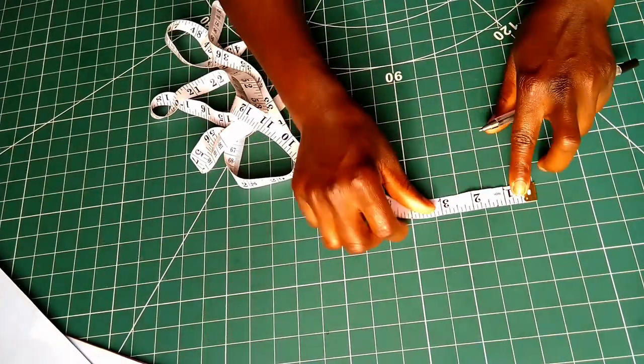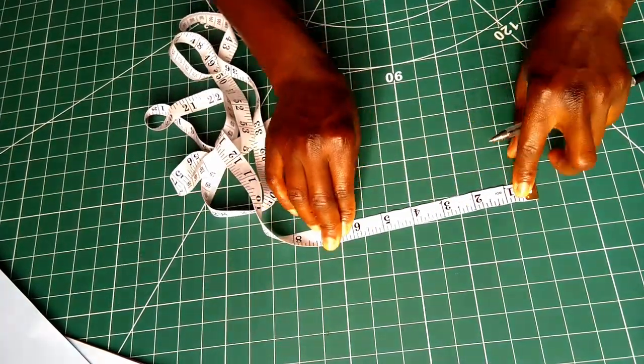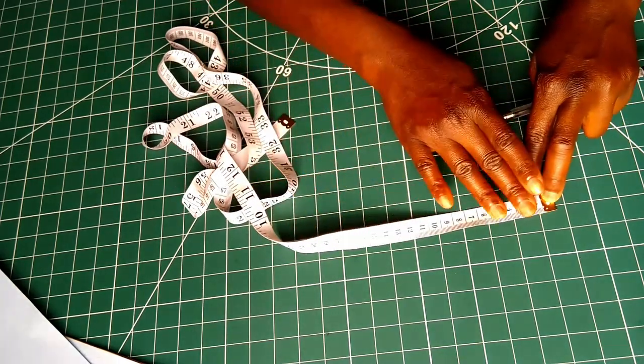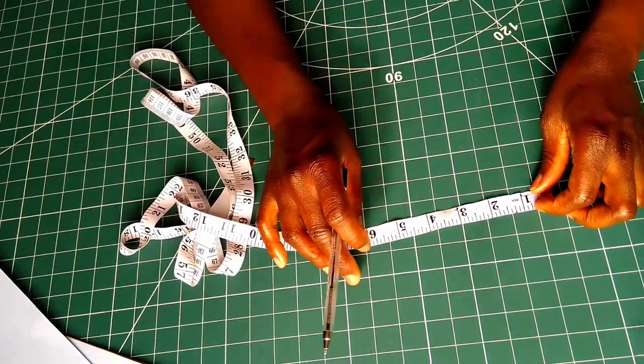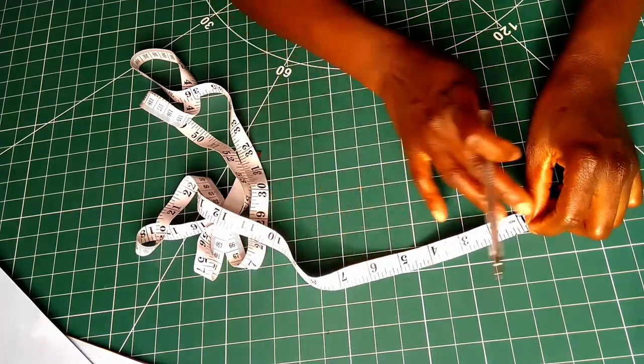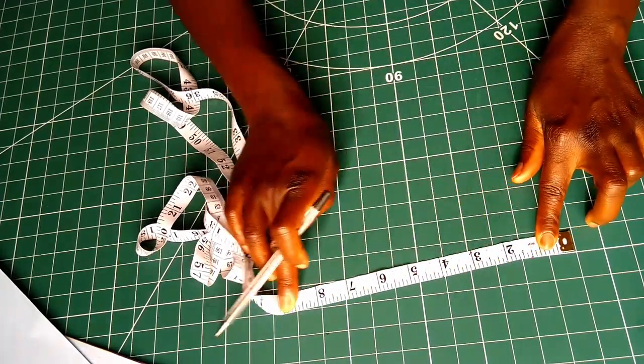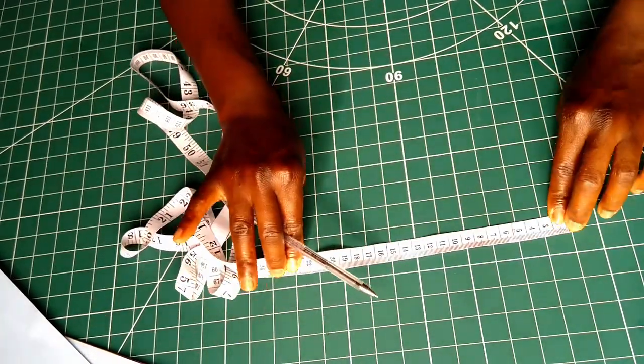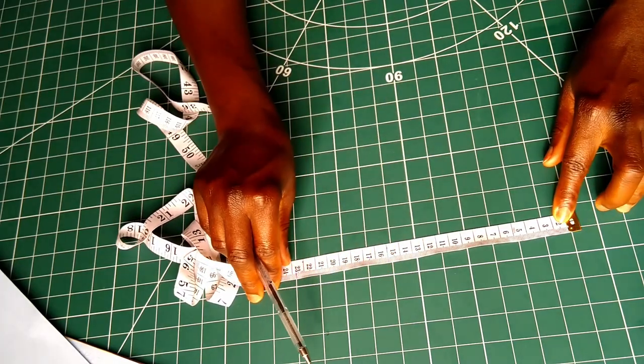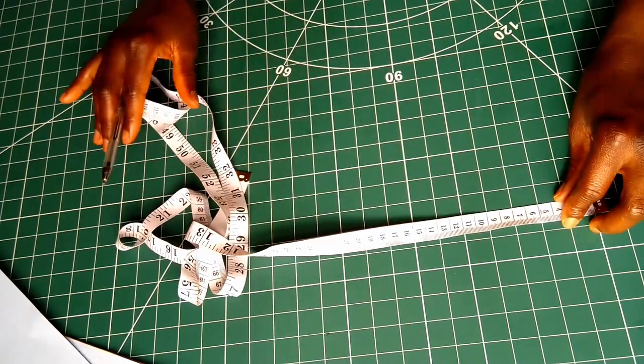So in this video, we're going to learn how to use the metric system of measurement. That's the centimeter side of the measuring tape. This measuring tape has both systems of measurement. We have the imperial system which measures in inches here, and then we have the metric system which measures in centimeters.